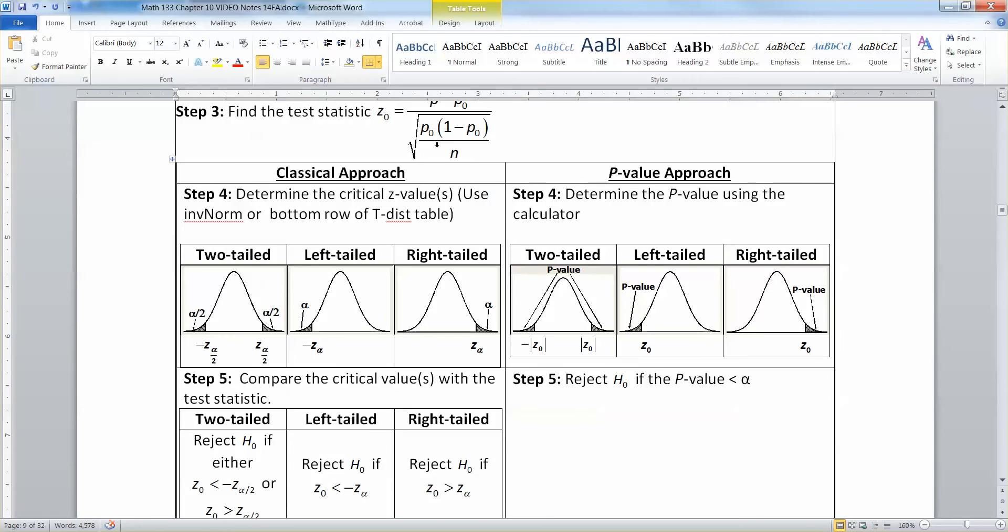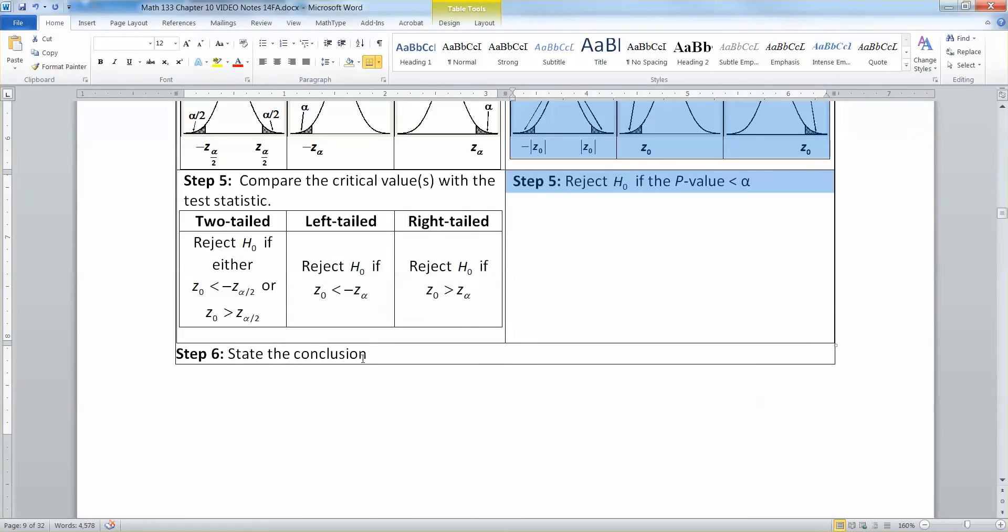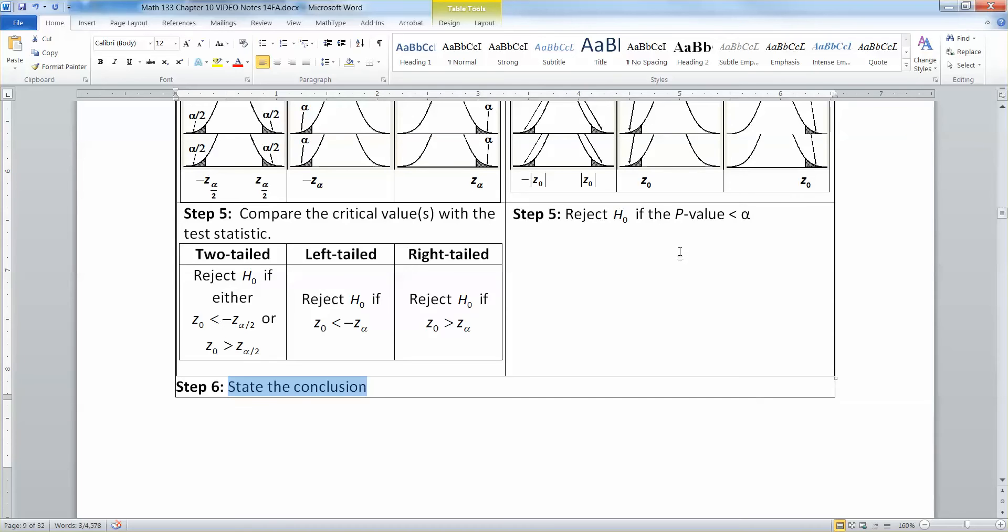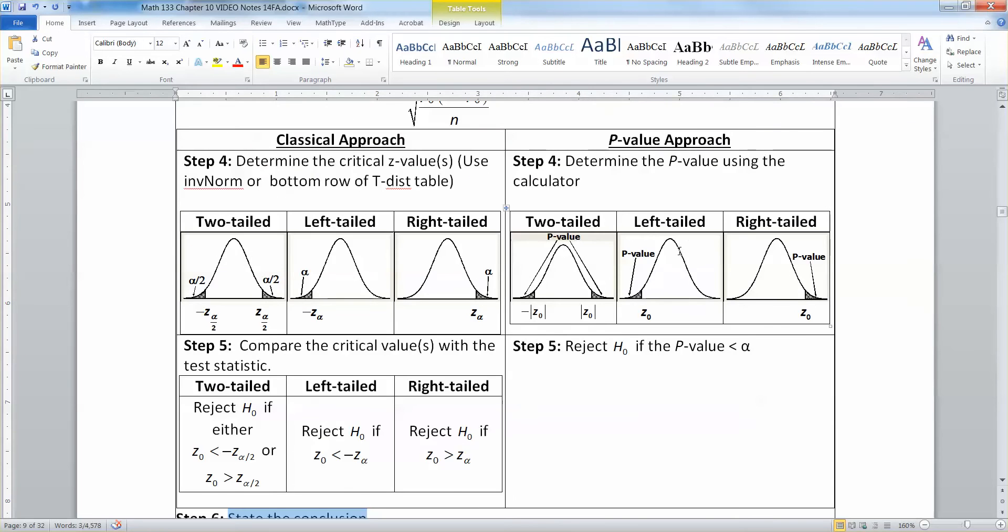Alright, then you have to make a choice. If you're doing the classical method, you're going to use step 4 and 5 from the classical approach here. If you're doing the p-value method, you're going to use step 4 and 5 from the p-value approach over here. So, whichever one is appropriate, then you're going to state your conclusion. And we already learned how to do that in section 10.1.